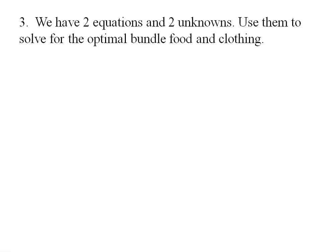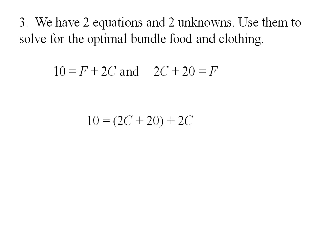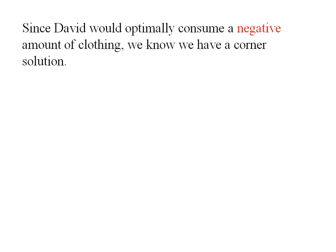Now I have two equations and two unknowns. The budget line is 10 = F + 2C, and the tangency condition gives F = 2C + 20. Substituting in: 10 = (2C + 20) + 2C, which simplifies to 10 = 4C + 20, then −10 = 4C, giving C = −2.5. The optimal amount of clothing is negative — which doesn't make sense. You can't buy negative clothing, so we have a corner solution.